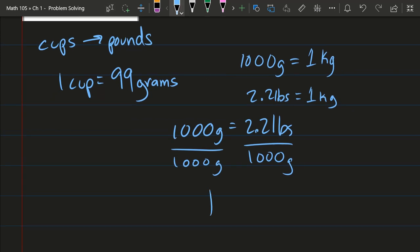Do that to both sides. So on the left side, 1,000 divided by 1,000 is 1, 1,000 grams, and grams cancel. When you divide by the same thing, you get 1.